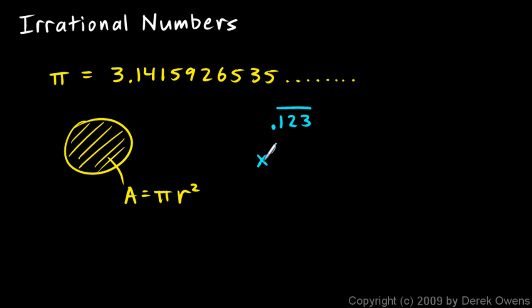And we sure can. You remember the method? We say x equals 0.123 repeating, and then there are three digits repeating here, so we multiply by 1,000, and we get 1,000x is 123.123 repeating.